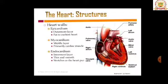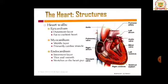Auricles are separated from ventricles. As mentioned in the previous video, oxygenated and deoxygenated blood do not mix. The left auricle is separated from the right auricle by the interatrial septum. The left ventricle is separated from the right ventricle by the interventricular septum. These septa are walls that separate the chambers.